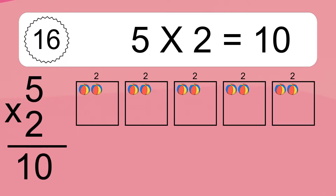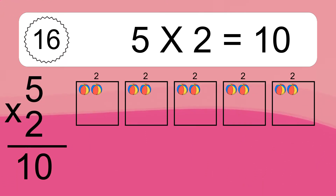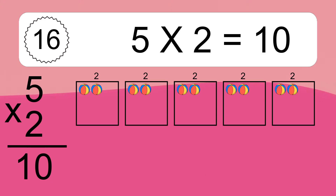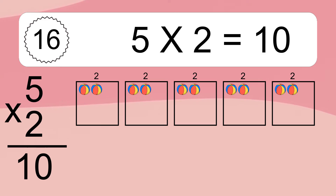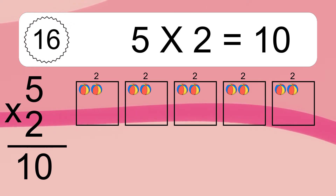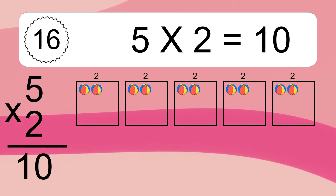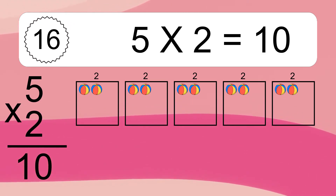This equals 10 balls. We have 5 boxes and each box has 2 colorful balls inside. If you count all the balls in all the boxes together, you will have 5 times 2 balls. This equals 10 balls.